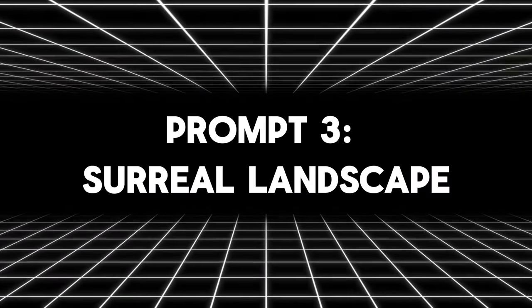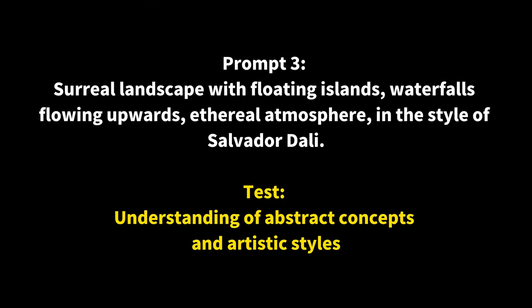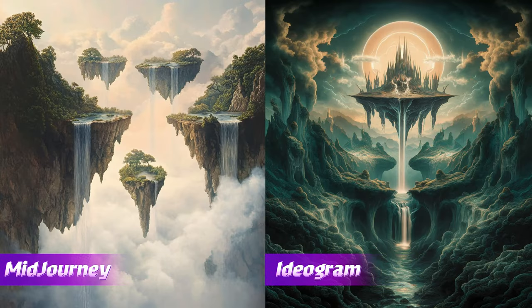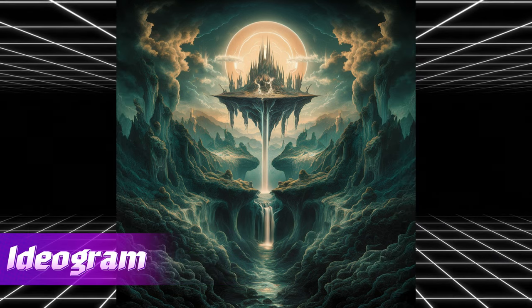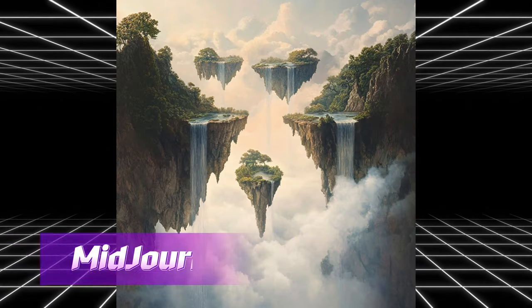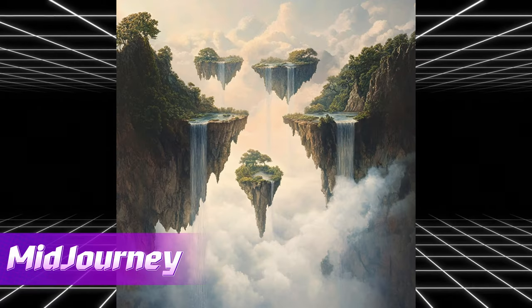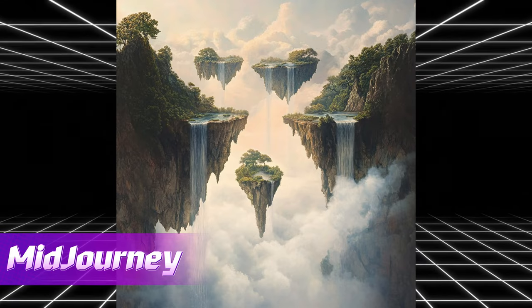Prompt 3: Surreal Landscape — a surreal landscape with floating islands, waterfalls flowing upwards, an ethereal atmosphere, in the style of Salvador Dali. Let's see how each tool handles abstract and surreal concepts. Ideogram's image style is more gothic, giving people a mysterious and ancient feeling. The image style created by Midjourney is more aesthetic and dreamy, giving people a fresh and natural feeling.